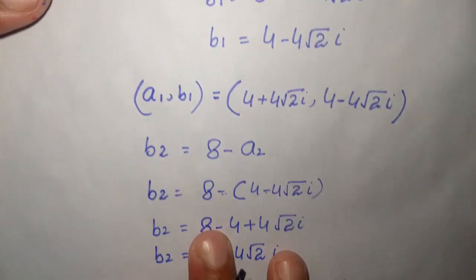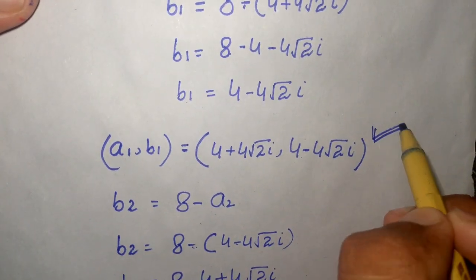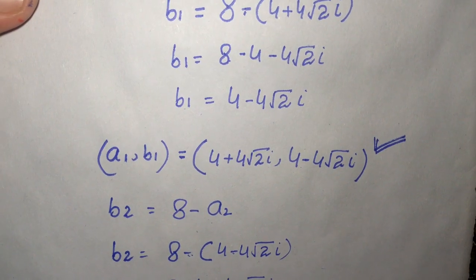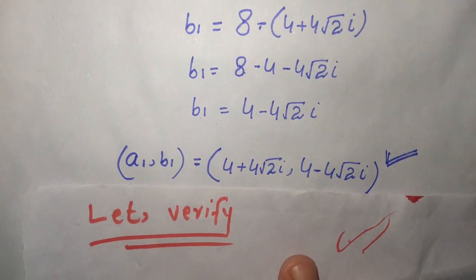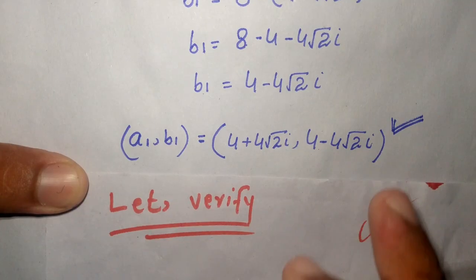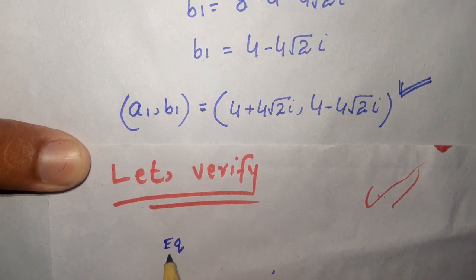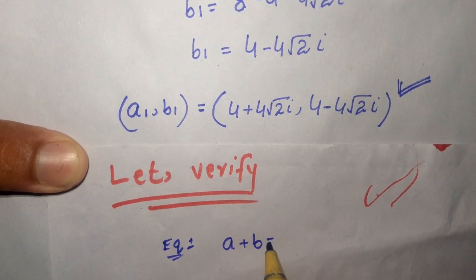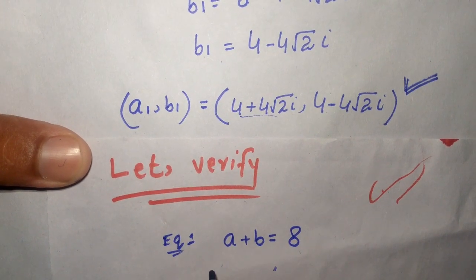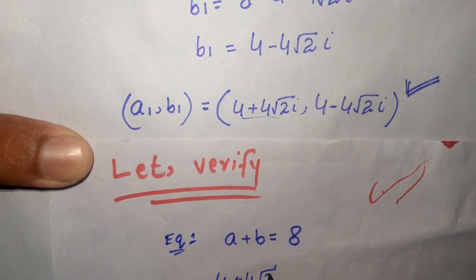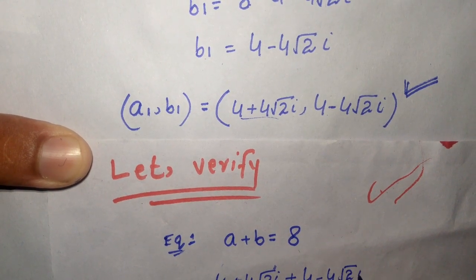Now we verify our answer using the first solution a1 b1, that is 4 plus 4 square root of 2 i and 4 minus 4 square root of 2 i. We verify equation number 1: a plus b equals 8. Substituting: (4 plus 4 square root of 2 i) plus (4 minus 4 square root of 2 i).